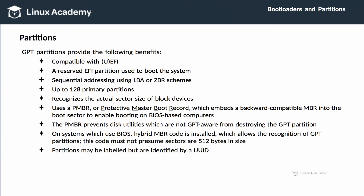GPT partitions support up to 128 primary partitions. GPT drives recognize the actual sector size of the underlying block device. They also allow for a PMBR, or Protective Master Boot Record, so that software or hardware expecting to find an MBR can find it — and doesn't mistake the drive as being unpartitioned or damaged and thereby destroy the data on it.